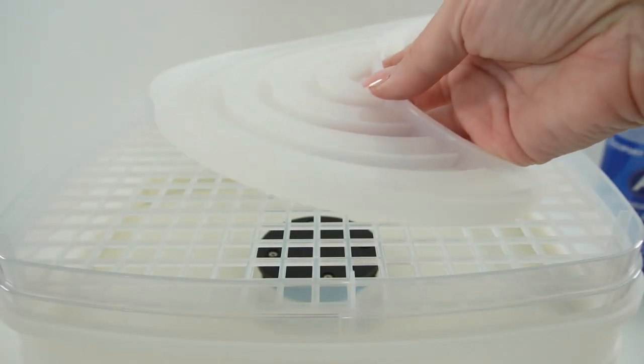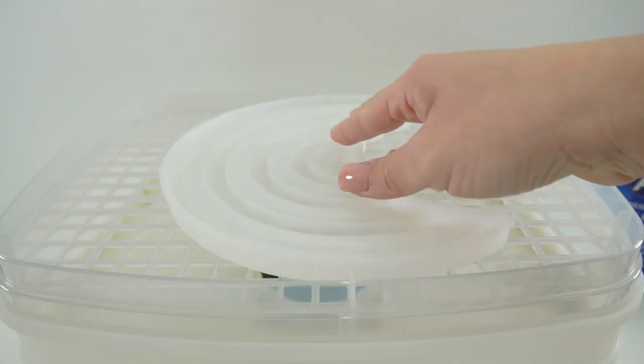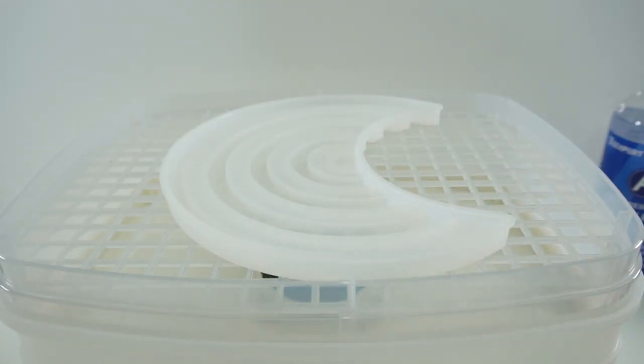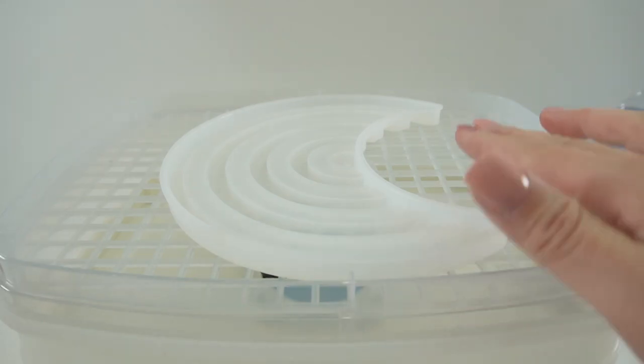So to start we're going to place each of the molds in a tray. These pieces are pretty big so each tray only fits one piece. So here is the bottom piece.